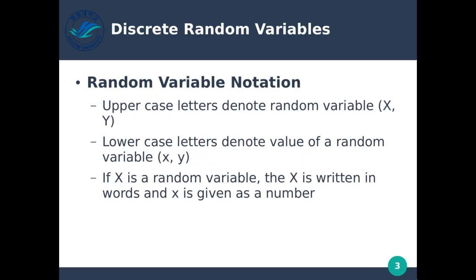Random variable notation: uppercase letters like capital X and capital Y denote random variables, where lowercase letters denote the value of the random variable. If you see the uppercase X, it denotes the random variable, which is described in words. The lowercase x denotes the value — the actual number we measure or observe. So the uppercase X is written in words, and the lowercase x is given as a number.